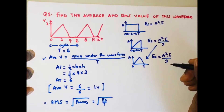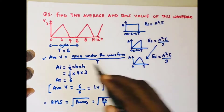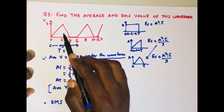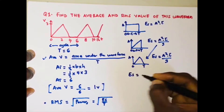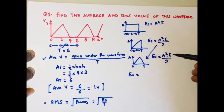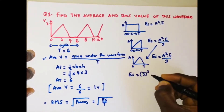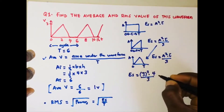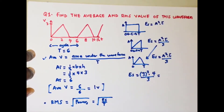Based on the standard waveform energies, we can find the RMS value. For this waveform, from 0 to 4 we have a triangle, and the rest is clipped. Using the formula — amplitude squared times period divided by 3 — we get 3 squared times 4, divided by 3. That's 9 times 4 equals 36, divided by 3 equals 12. So the energy of this signal is 12.